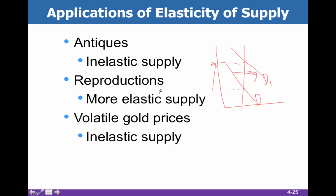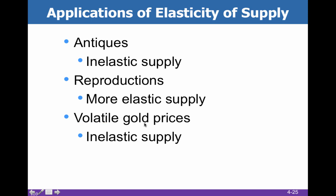Once we get to better technology enabling better reproductions and prints, supply becomes a little more elastic. Gold is another example — it's relatively inelastic but not purely so, because we can mine for more. Given that supply curve and the wildly changing demand for gold, we do get a lot of volatility in the gold market.